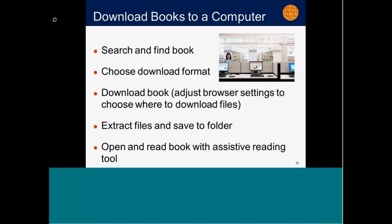Just as you would, you'd search and find a book, choose the download format — whether it's DAISY text, MP3, or Braille — and then download the book. As Phil said, there are a lot of different ways books get downloaded depending on your browser, browser version, and operating system. It may ask you where to download the file or just download it to a folder. You can go into browser settings to decide where you want to download books if you're having problems finding them. Once downloaded, find it, extract it, and open the book with your preferred assistive reading technology.